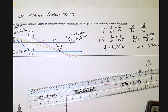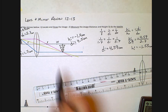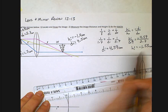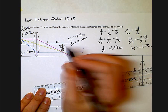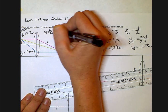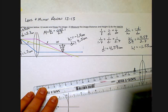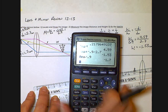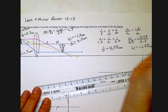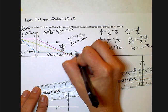That means that this is real because it's over here, and I've got a positive di. And it is inverted because I have a negative h, and it's upside down, and it's bigger. I could solve for the magnification to tell me how much bigger. So height of the image over height of the object. My magnification is negative 1.7. Since it's greater than 1, that means that it's bigger. So I have real, inverted, bigger.